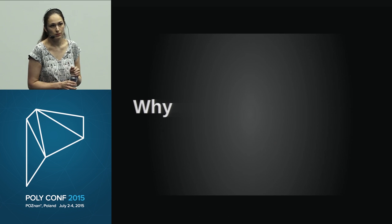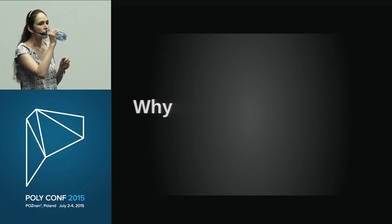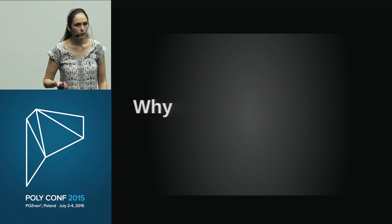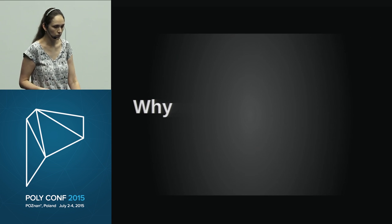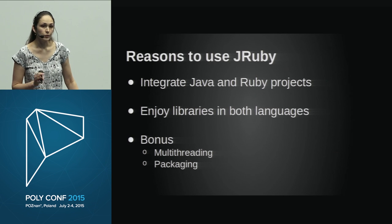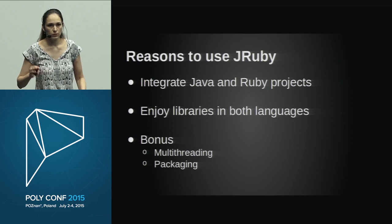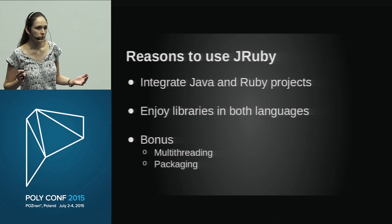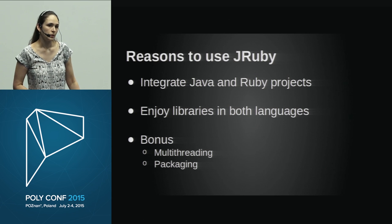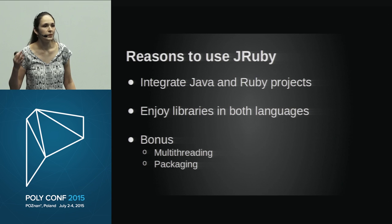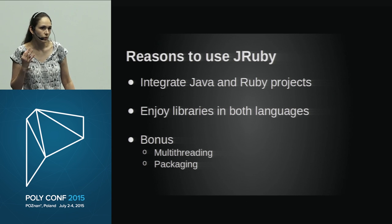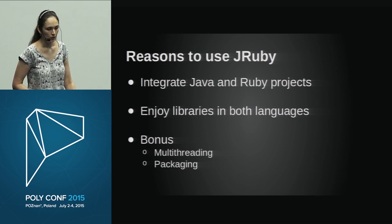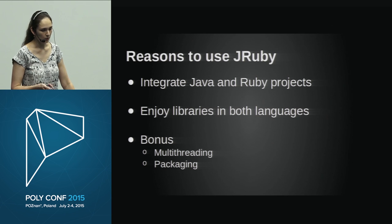A fair question is: why should I use JRuby when there's already MRI Ruby, the C-based Ruby? My main motivation was that it allowed me to integrate Java and Ruby together when I had two existing code bases. But even without that, if you write in Java and there's a cool Ruby library for, say, PDF generation, you can call it from Java without rewriting that logic. The same goes vice versa. There are also multi-threading and packaging benefits I'll briefly discuss.